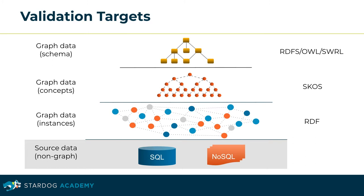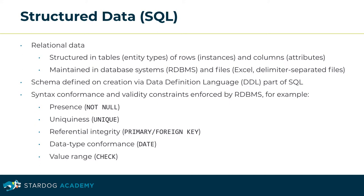Relational data is the predominant source accessed via the virtualization layer. It's highly structured across tables that usually represent an entity type. Each table row stores data for a particular instance split up into attribute columns. The schema is mandatory and defined upfront via statements of the data definition language in SQL, such as CREATE TABLE.